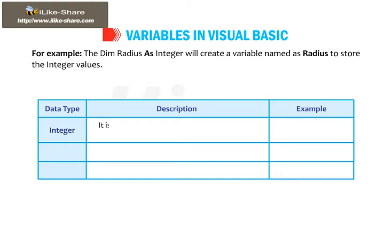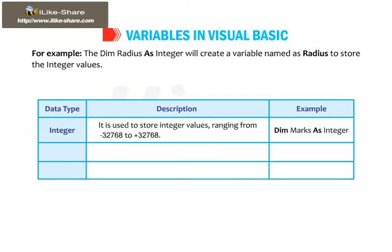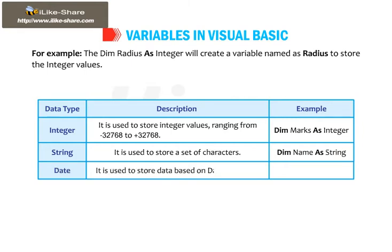Integer is used to store integer values ranging from minus 32768 to plus 32768. Example: DIM marks as integer. String is used to store a set of characters. Example: DIM name as string. Date is used to store data based on date and time. Example: DIM DOB as date.